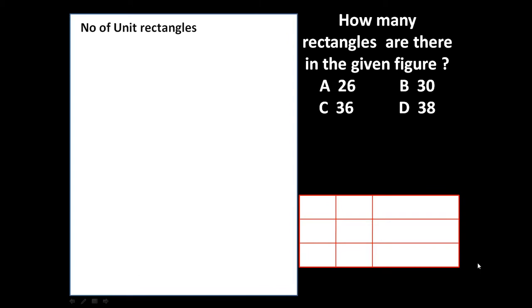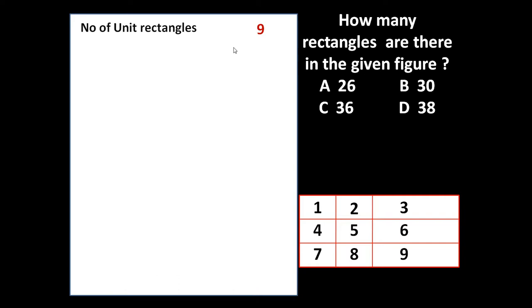To answer this question, let us count the number of unit rectangles, or small rectangles, which are making this big rectangle. If we start counting: 1, 2, 3, 4, 5... so total 9 unit rectangles are there. Each small rectangle is made of one unit rectangle, that is why we call them unit rectangles. So such unit rectangles are 9.